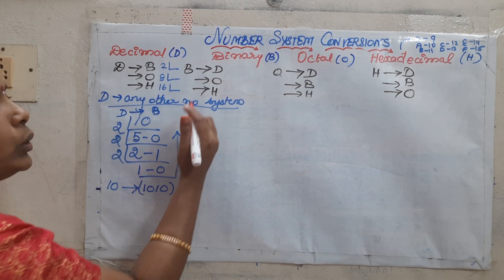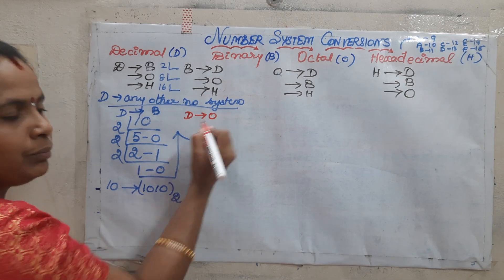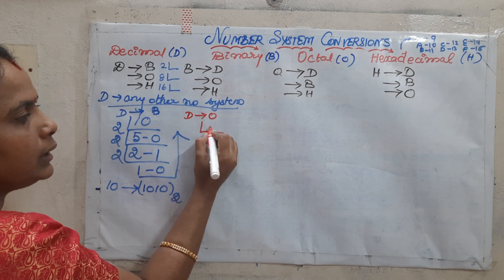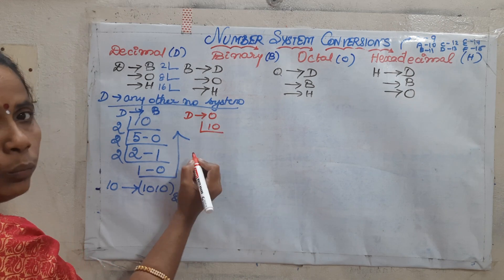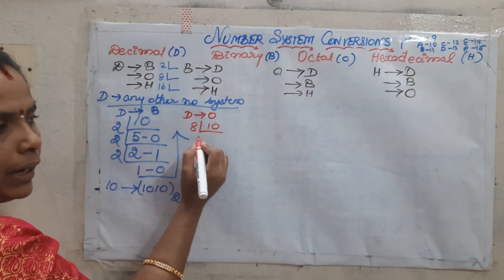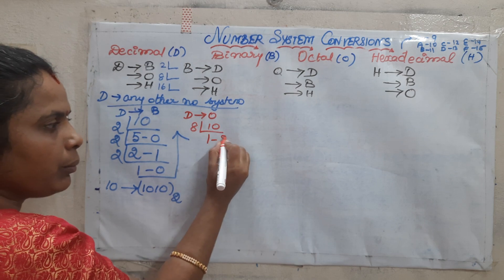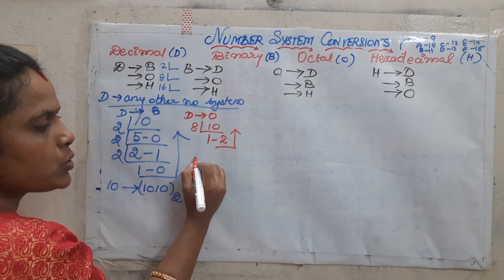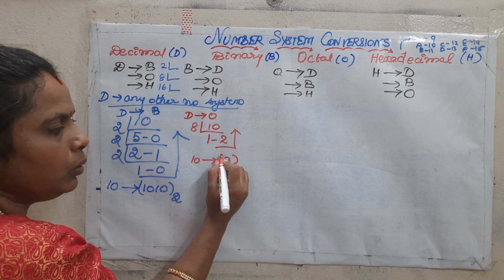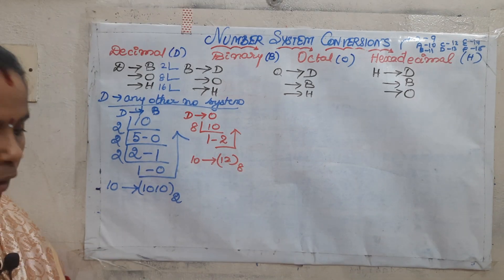Now let us move on to decimal to octal. The same procedure — we are taking the same number 10 and successively dividing by its radix. 8 ones are 8, so the remaining is 2. So 10 will be equivalent to 12 to base 8.